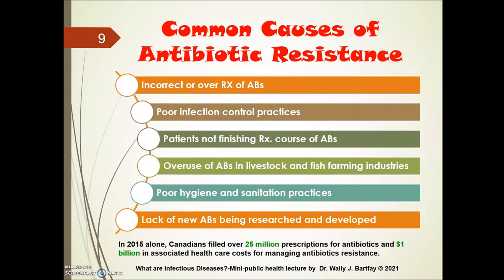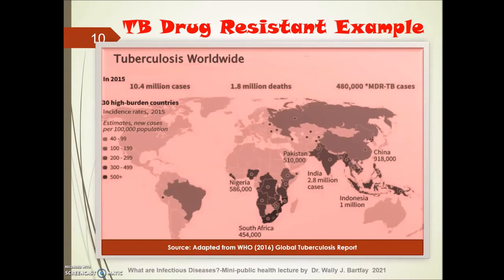Here's an interesting statistic: in 2015 alone, Canadians filled over 25 million prescriptions for antibiotics, with $1 billion in associated healthcare costs for managing antibiotic resistance. This is a growing public health challenge both in Canada and globally. Regarding tuberculosis, the 2015 WHO Global Tuberculosis Report noted over 10.4 million cases, almost 2 million deaths, and roughly half a million drug-resistant TB cases.